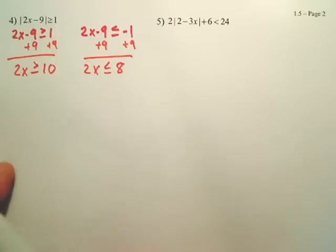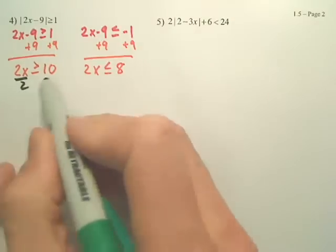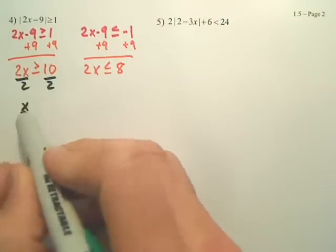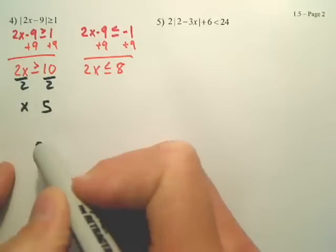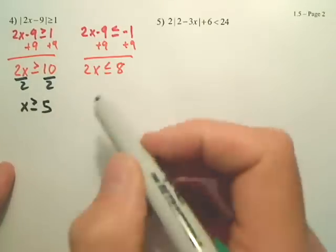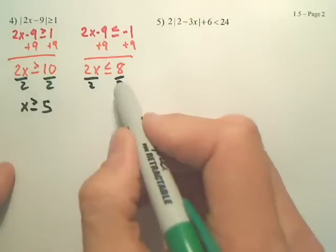We're going to finish this off. We're going to divide this by 2. Does the sign flip? No, we did not divide by negative, so the sign stays the same. Here we divide by positive 2.